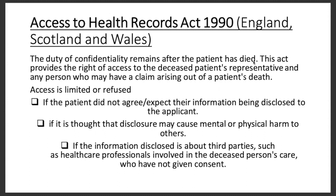Access can be refused if, for example, a family member submitted a form to obtain the confidential information of a person who has died. Access is also refused if disclosure may cause mental or physical harm to others, or if the information disclosed is about a third party — such as a healthcare professional involved in the deceased person's care — who has not given consent. That healthcare professional has the right to not have their information disclosed to any other person.